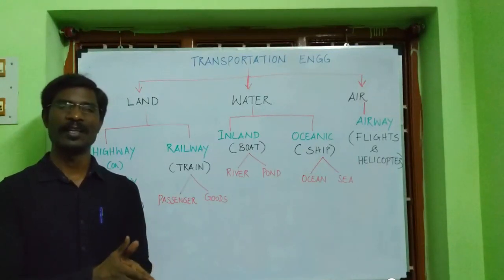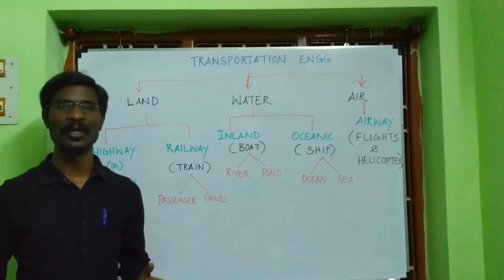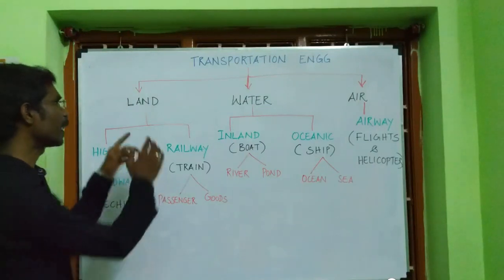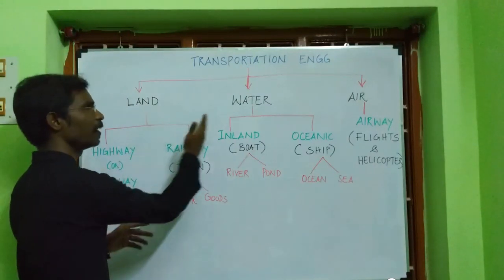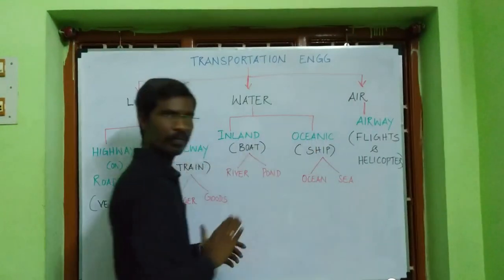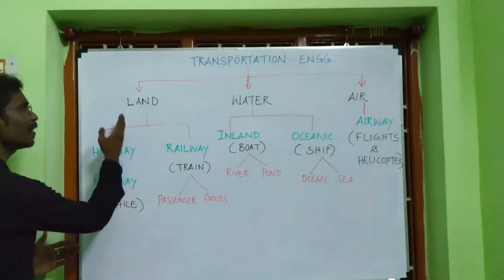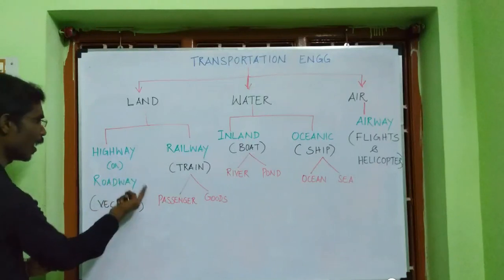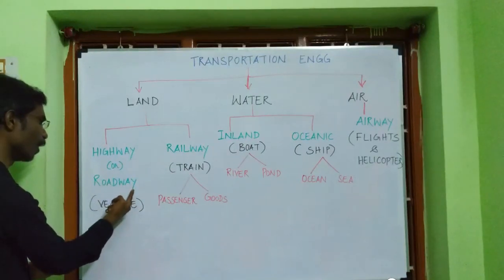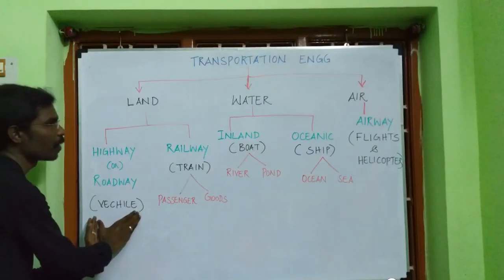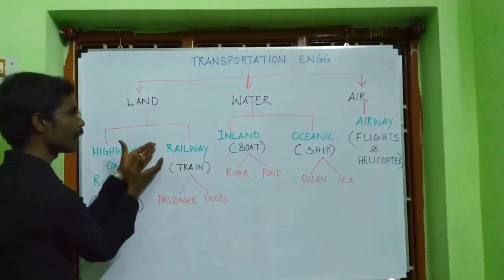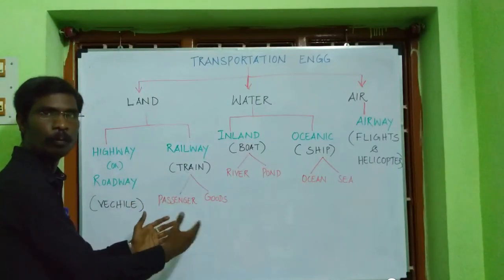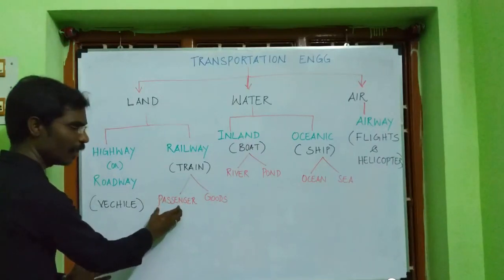The modes of transportation engineering are classified into three categories: based on land, based on water, and based on air. Land transport is again classified into two categories: highway or roadway, which is used by all vehicles, and railway, which is used by trains. Trains may be categorized into two types: passenger trains and goods trains.